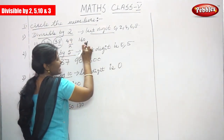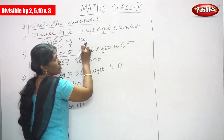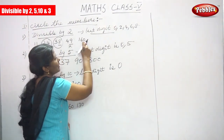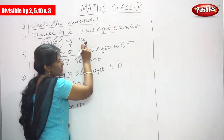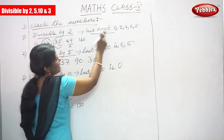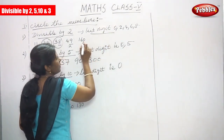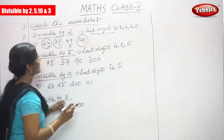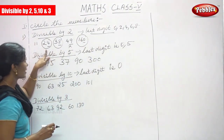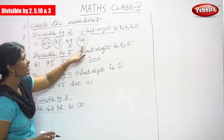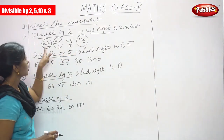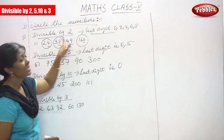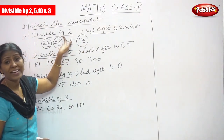Next is 160. The last digit is 0, so it ends with 0 and is divisible by 2. Circle the numbers — that is 24, 38, and 160. These numbers are divisible by 2.